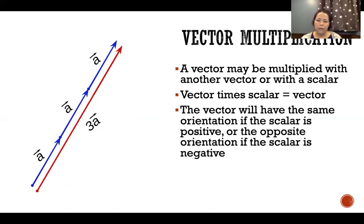When we multiply a vector times a scalar, the result is a vector. The vector will have the same orientation if the scalar is positive, or the opposite direction if the scalar is negative. We would just flip it backwards because a negative vector is just a backwards vector.